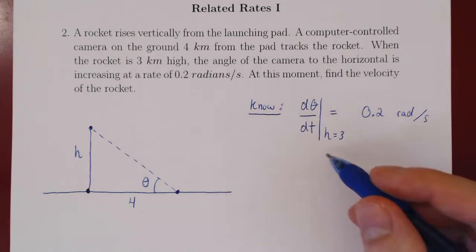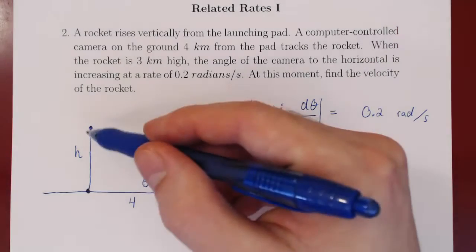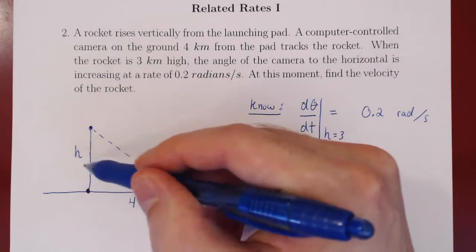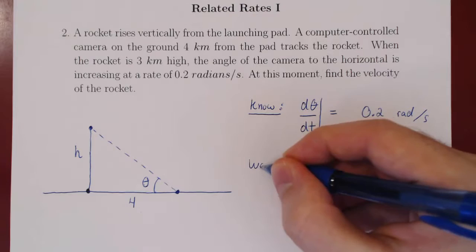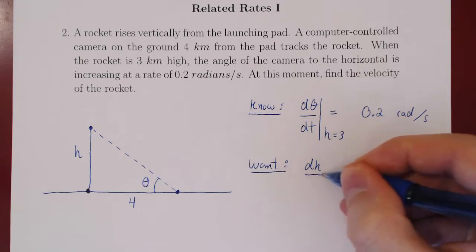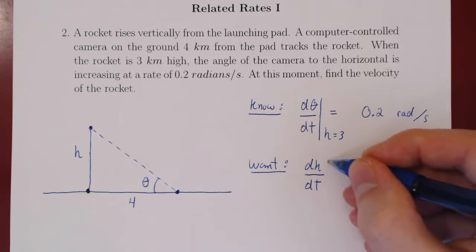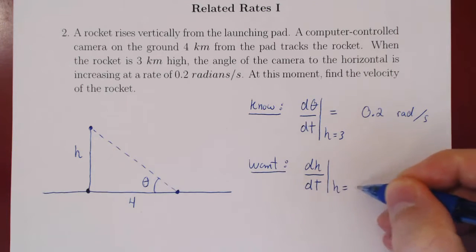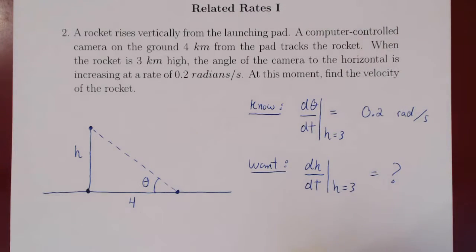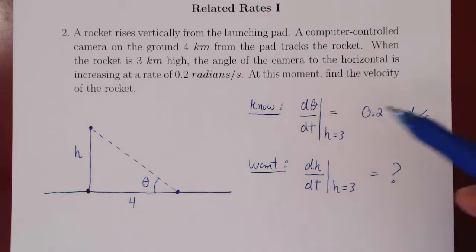At this moment, when the height is 3, we want the velocity of the rocket. The velocity of the rocket is the rate of change of h, which is dh/dt, specifically when the rocket reaches a height of 3 kilometers. That's what we want to find. At this point, we forget the word problem because we have everything we need — we have the picture, we know what we know, we know what we want, and now we're good to go.